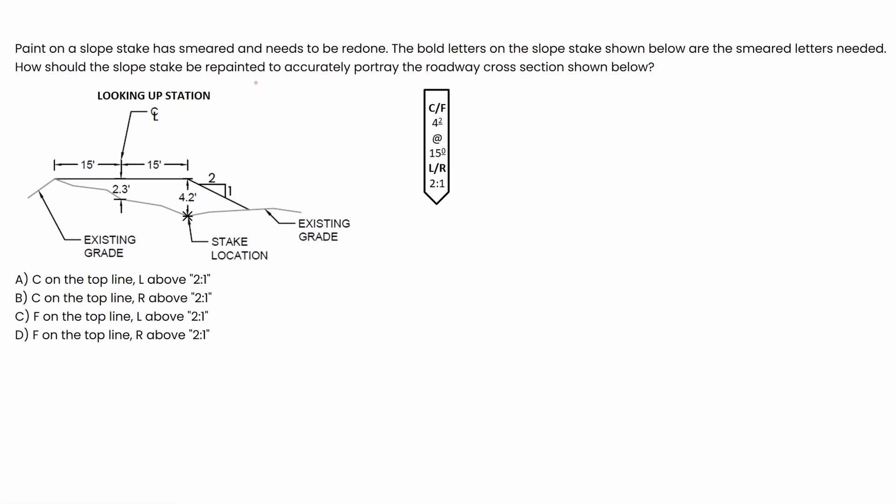So today we have a site development problem. This is going to be a PE problem. We're going to be talking a little bit about excavation embankment, site layout, those types of things. Here's what the question says. Paint on a sloped stake has smeared and needs to be redone. The bold letters on the sloped stake shown below are the smeared letters needed. How should the sloped stake be repainted to accurately portray the roadway cross section shown below?